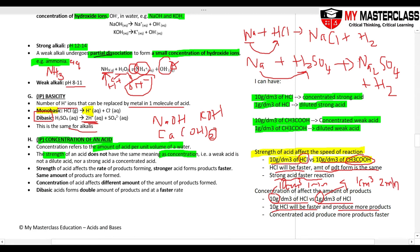So strength of your acid affects the rate. The stronger the acid, the faster the reaction. The same amount of products are formed. Concentration affects the amount of products. The basic acid forms the stable amount and it will be at a faster rate.